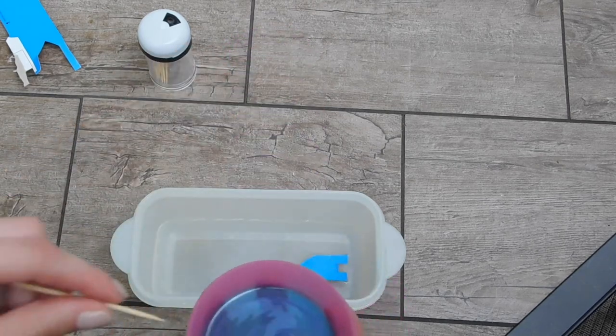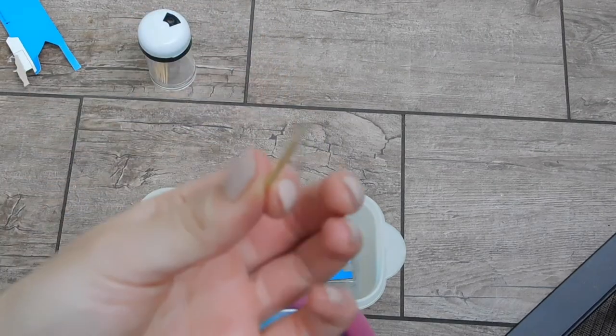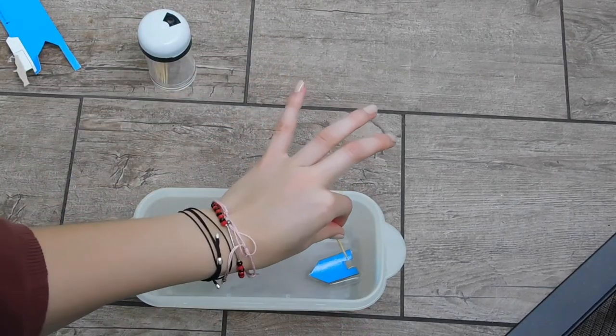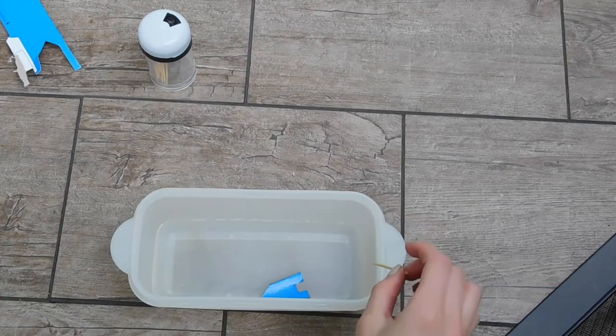Then dip the toothpick into the liquid soap and use it to put the soap on the back of the boat where the notches are. You will then see your boat float across the water.